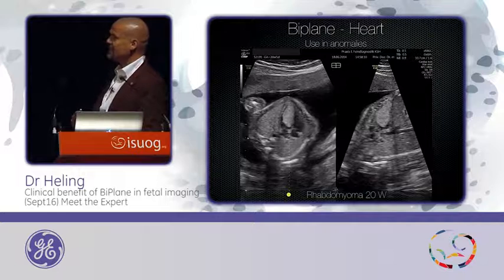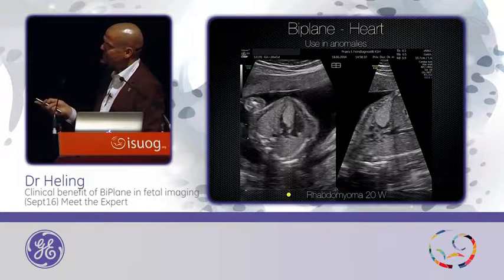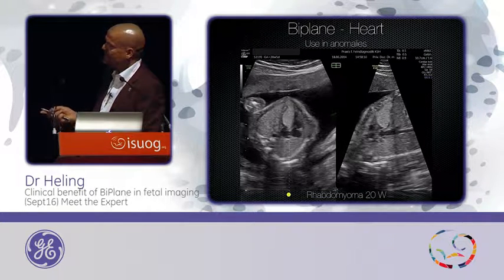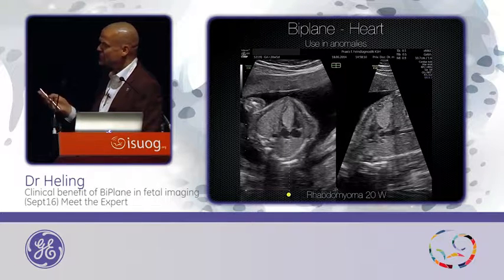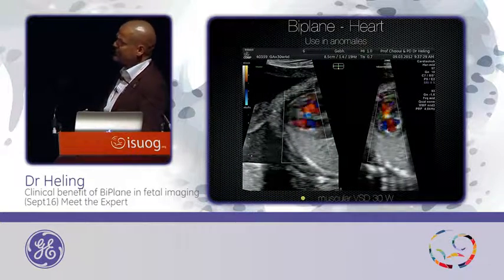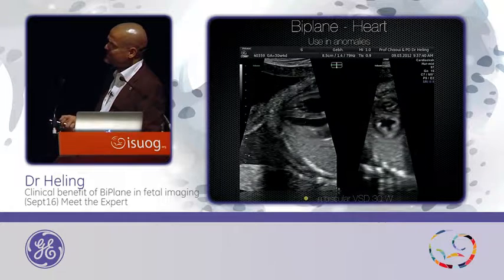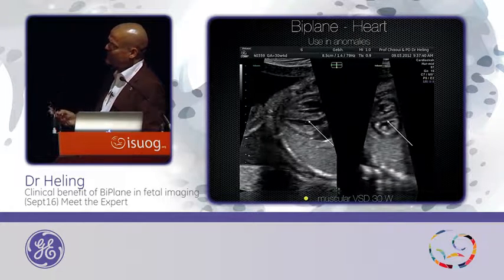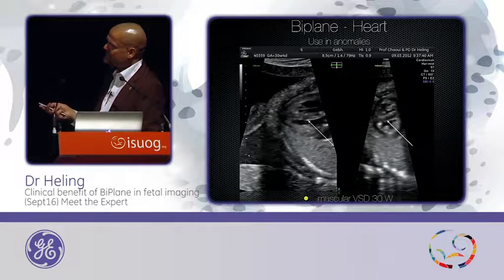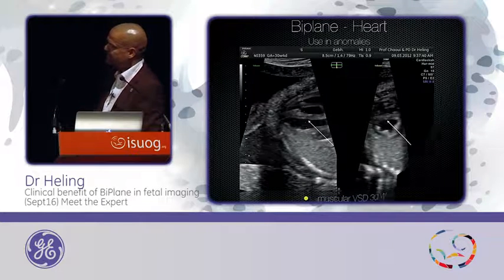This is an example of a rhabdomyoma at 20 weeks. I put the lines through and you can see directly the full dimension of the tumor in the heart, which fills the whole left ventricle — the origin is from the interventricular septum. You can do your measurements without changing the position of the transducer. The next is the description of a ventricular septal defect — I put the line through and you see the VSD. Going back to B-mode scan, you can clearly see the ventricular septal defect in B-mode, confirmed at 30 weeks.